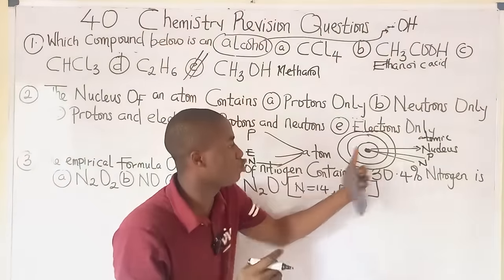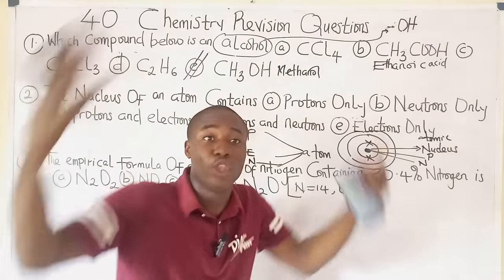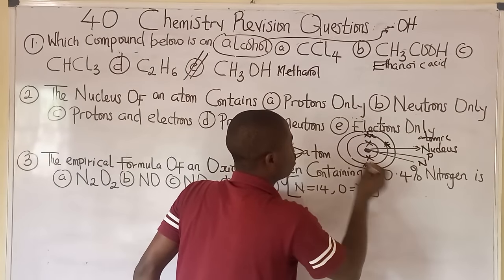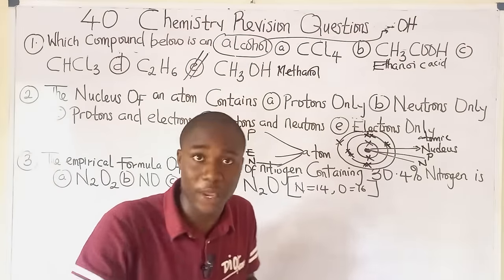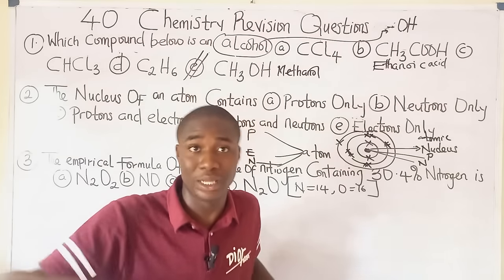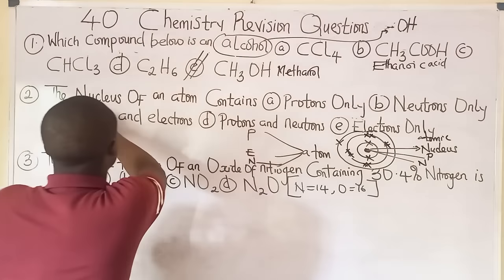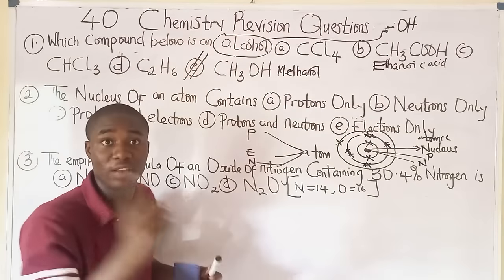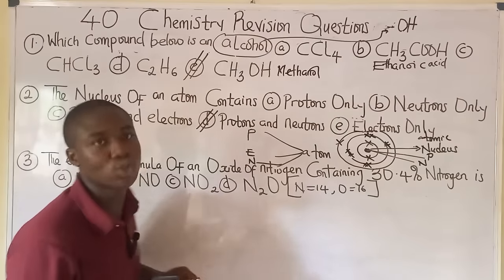Protons and neutrons are found inside the nucleus of an atom, while electrons revolve around the orbits. A region in space where there is a high probability of finding an electron is called the orbital. So the nucleus of an atom contains protons and neutrons — the answer is option D.